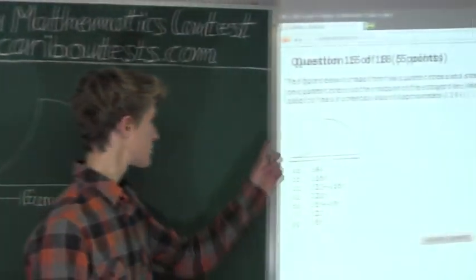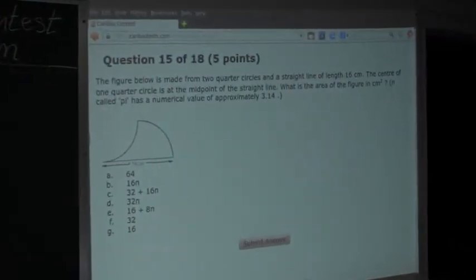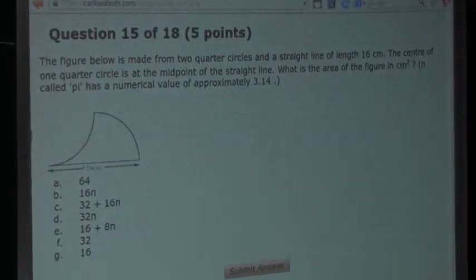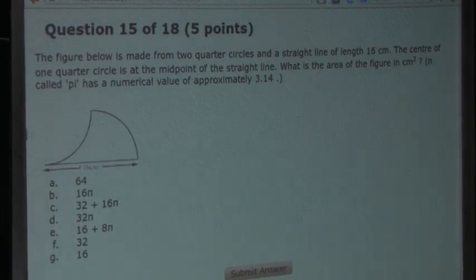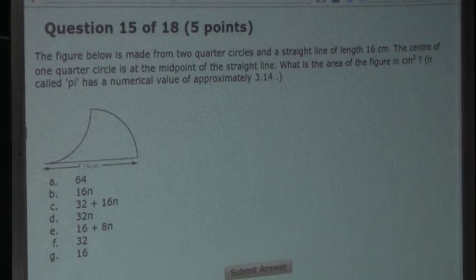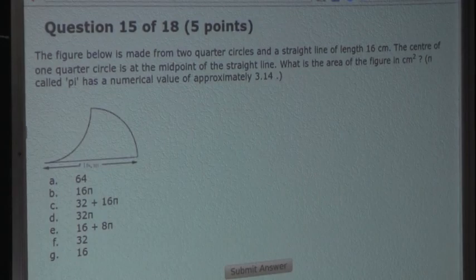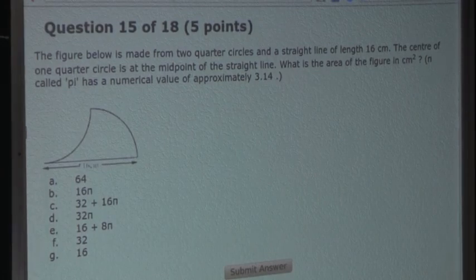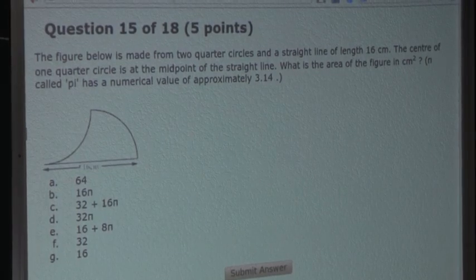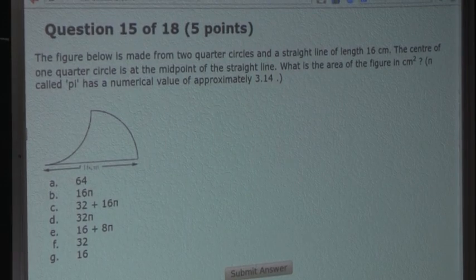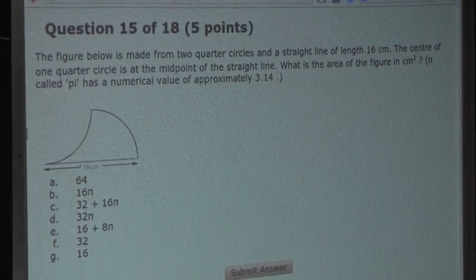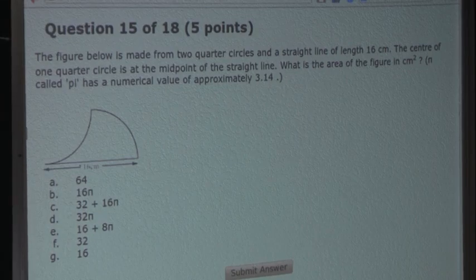Now the question is: The figure below is made from two quarter circles and a straight line of length 16 cm. The center of one quarter circle is at the midpoint of the straight line. What is the area of the figure in centimeters squared? Pi has a numerical value of approximately 3.14.